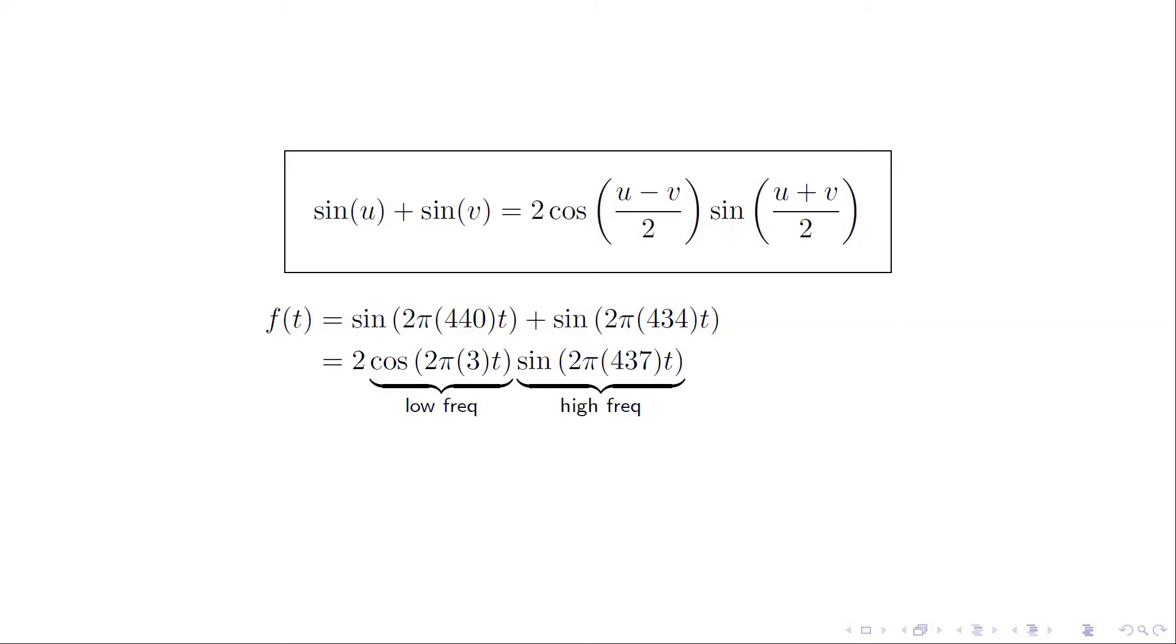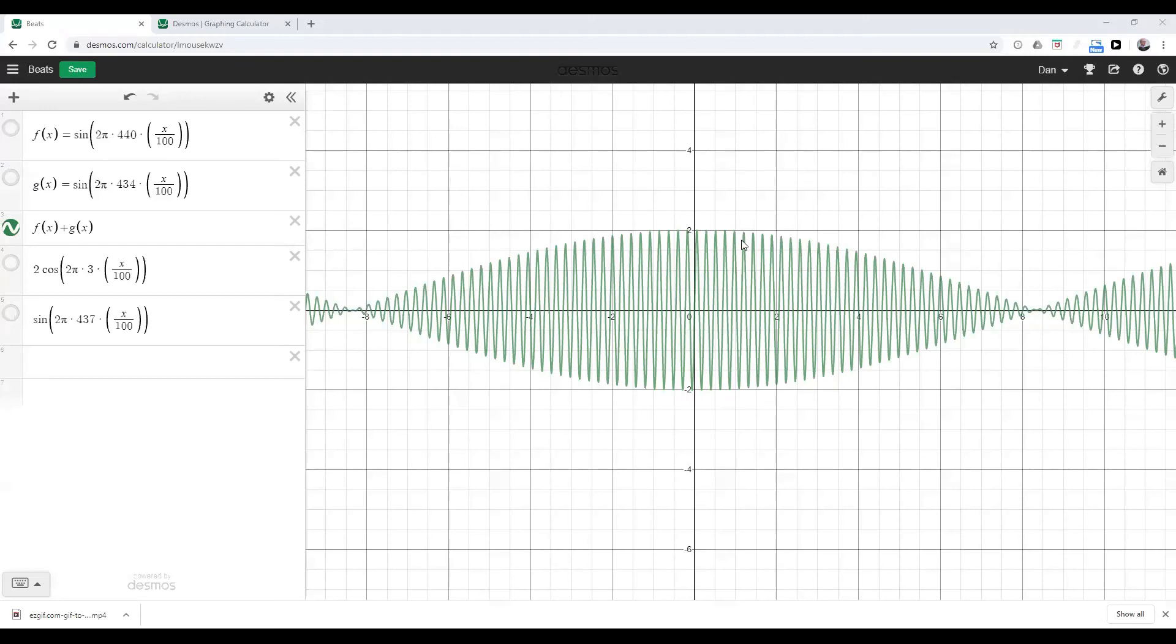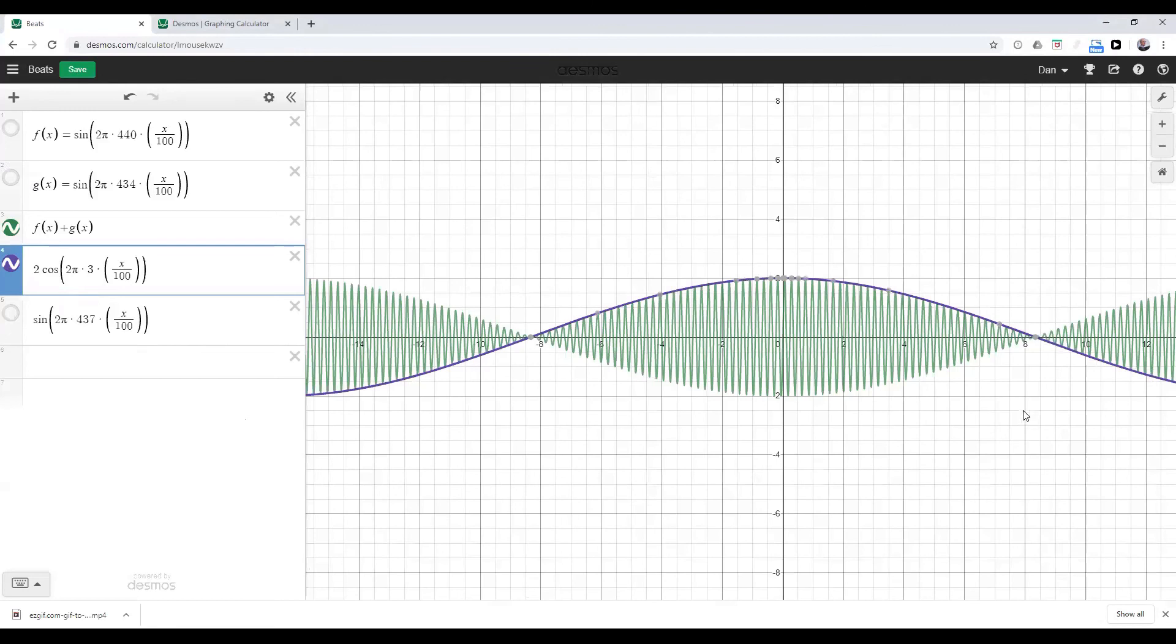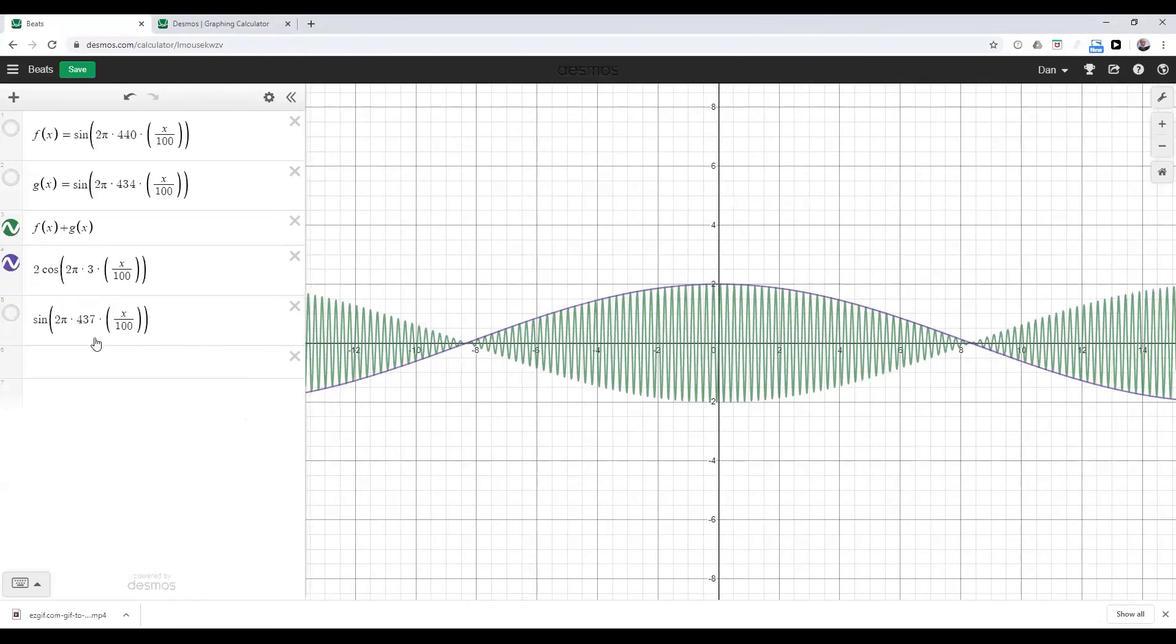So that is how we hear this. If we go back to Desmos we can actually see this happening here because what I've plotted here is indeed the 3 Hertz wave and the 437 Hertz wave. Notice that I've placed a 2 on it because there was a 2 in that trig identity and if I show you that you can see oh okay that is the thing which is controlling the amplitude of this 437 Hertz wave.